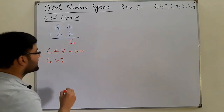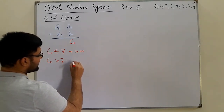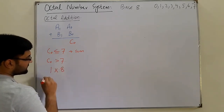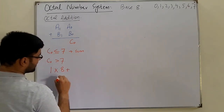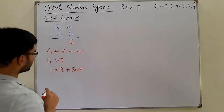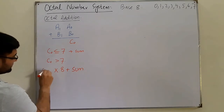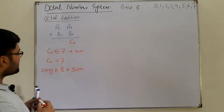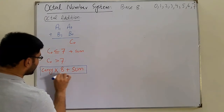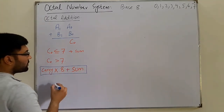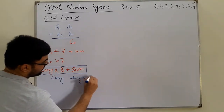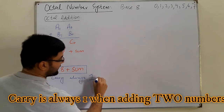The method is: carry multiplied by 8 plus the sum. In octal addition, the carry will always be 1 — the carry is always 1 whenever we perform octal addition.